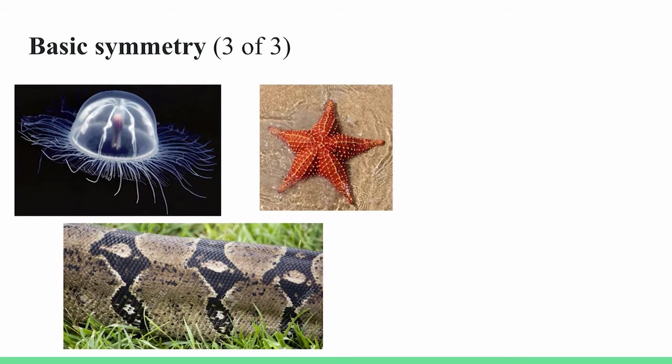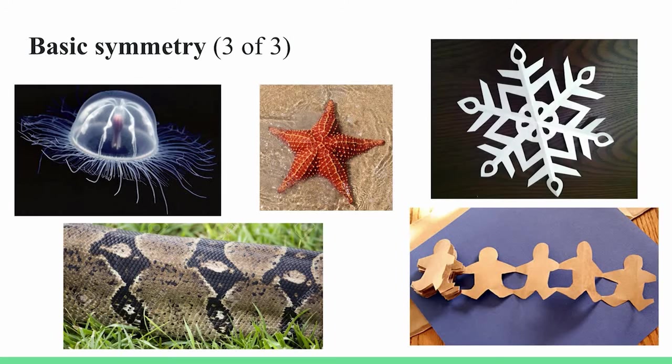Finally, basic symmetry. Symmetry is a very important way to classify animals. Radial symmetry, bilateral symmetry. Snakes have translational symmetry here, and you probably know what I'm about to say. Papercutting. We all like papercutting.